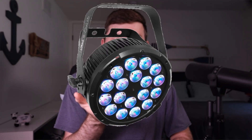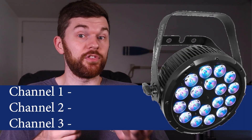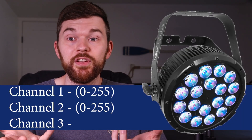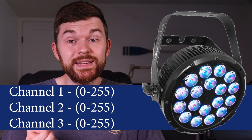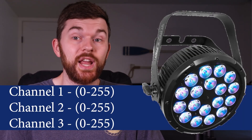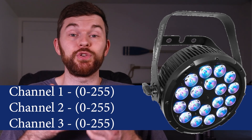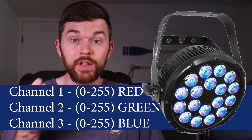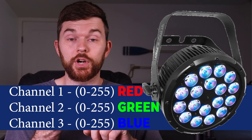This RGB fixture has three parameters utilizing three channels, each with a value from zero to 255, but blending the intensity of these three channels causes the fixture to produce any color. The three channels being red, green, and blue.